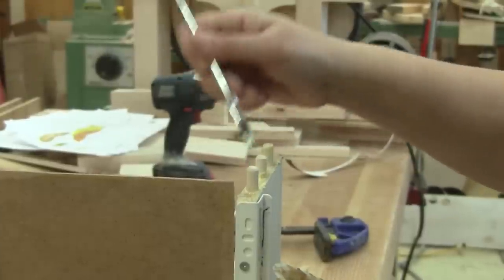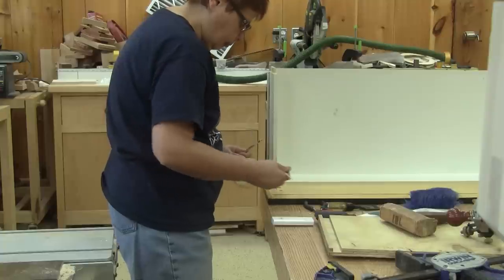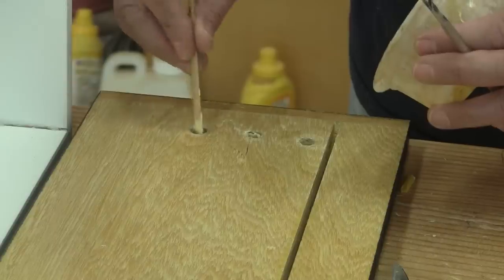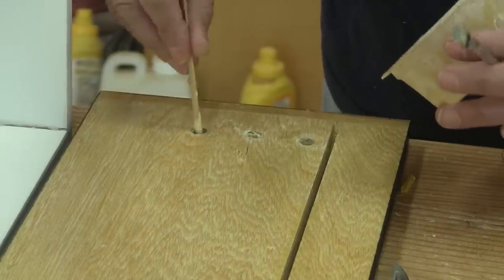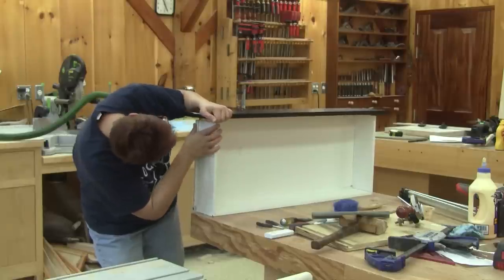Next I apply some glue on all the dowels and on the sides of the drawers. I also put some in the holes of the front of the drawer. Then it's time to put it all together.